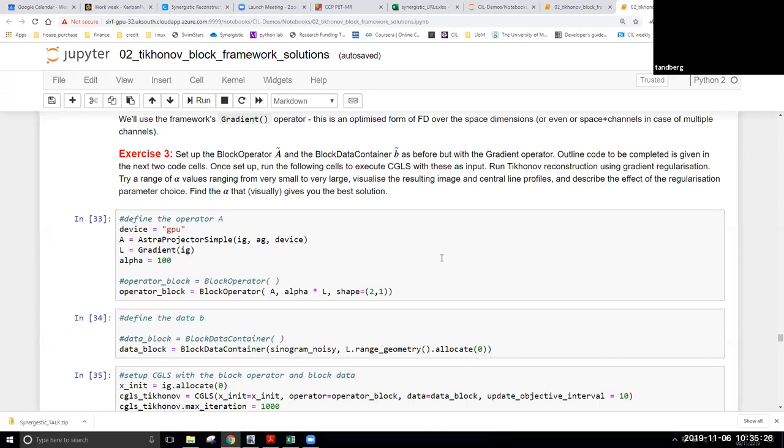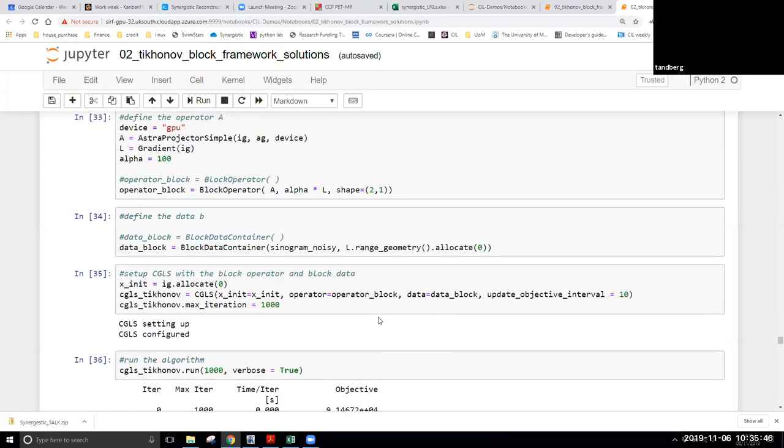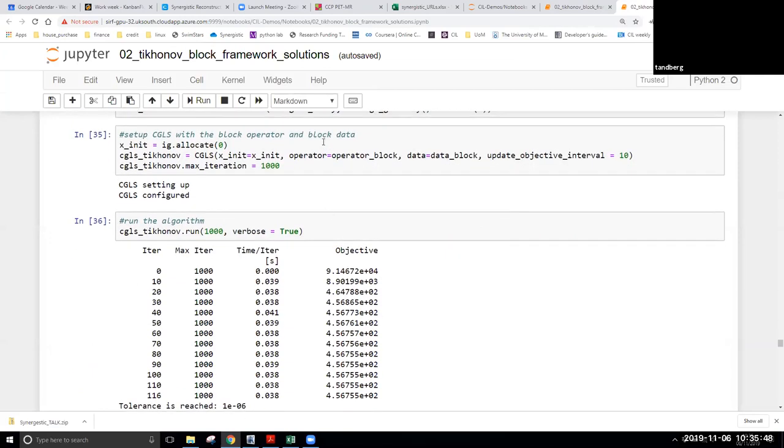We need to use our block framework, so we need to set up our block operator here, combining our A, and we can see we can multiply, apply a scalar onto our L operator, our gradient operator here, and similarly setting up the block data container for the right-hand side, and then carry on just feeding that, the block versions, into that same CGLS algorithm we were using before.